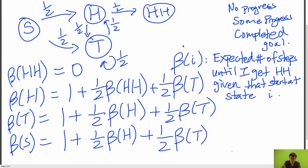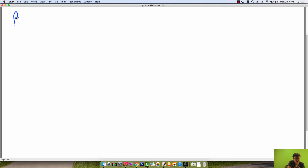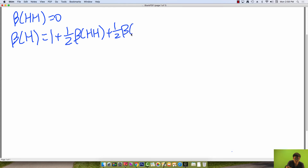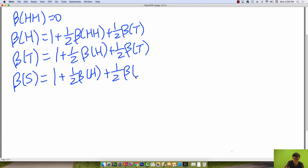So now we have our first-step equations, and we can solve the system of linear equations to get our answer. What we want is beta of S, because that's where we start, and we want to know how many time steps it takes to get to HH. So: beta of HH equals zero; beta of H equals one plus one-half beta of HH plus one-half beta of T; and beta of S equals one plus one-half beta of H plus one-half beta of T.